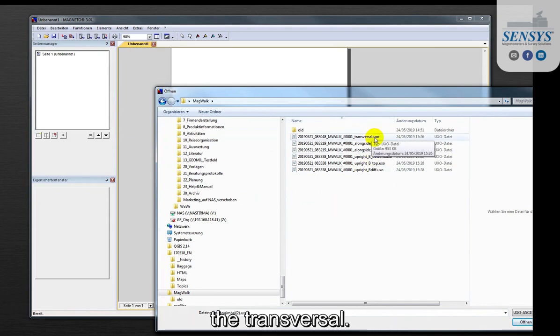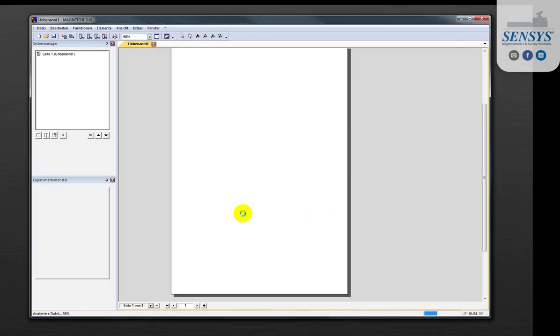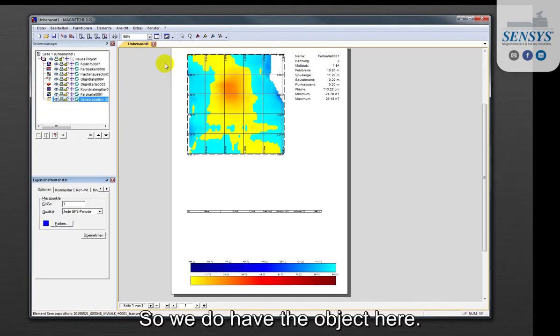We first take the transversal. So we do have the object here.